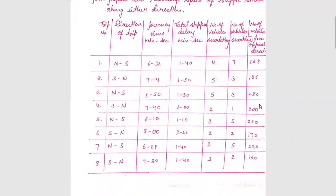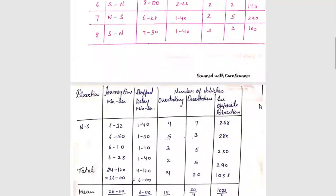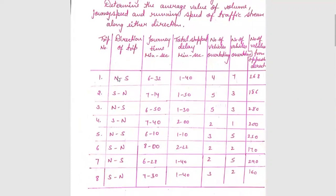Now for the solution. First, we will sort our data. We will separate it into north-to-south and south-to-north. In the floating car method, when there are observers, we account for the opposite direction as well.